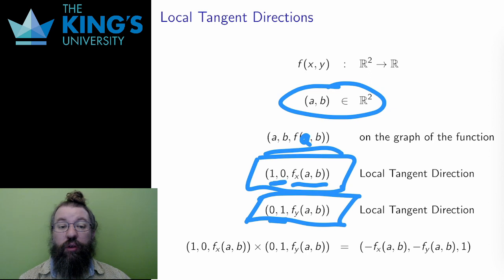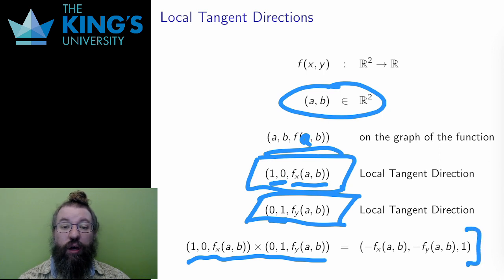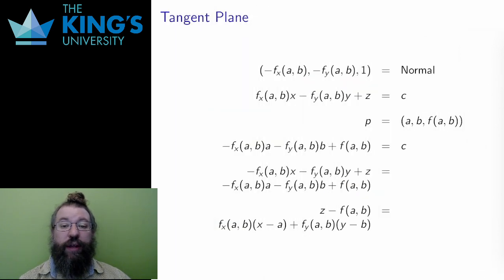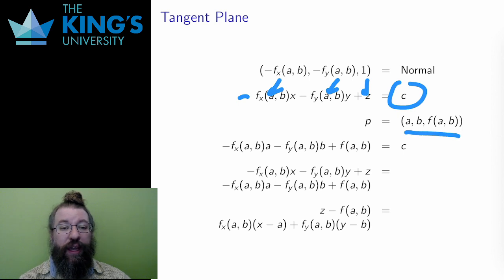Then, following the algorithm for equations of planes, the cross-product of the local directions produces the normal. Here is that cross-product. This vector made of the two partial derivatives is the normal to the tangent plane. Now I have a point and a normal, so I can write the equation of the tangent plane. The normal gives the coefficients of the equation of the tangent plane, except for the constant on the other side. To calculate this constant, I put the point back into the plane. Recall that the point is (a, b, f(a,b)), since this is on the graph.